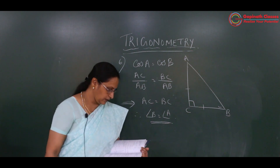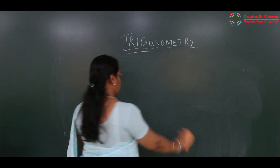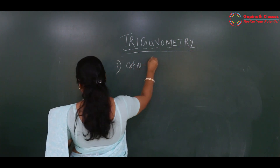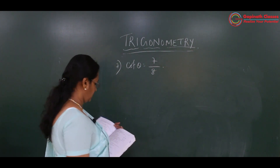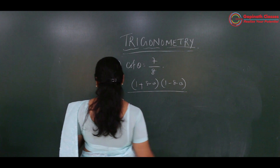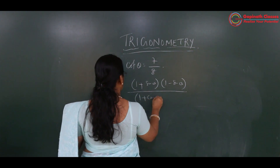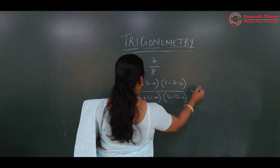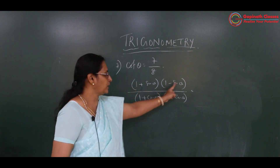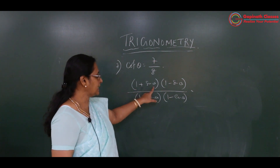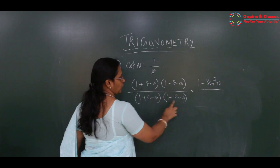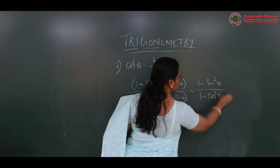Come to the seventh question. One ratio is given and we have to find the value. Evaluate: cot theta is equal to 7 upon 8. Evaluate: 1 plus sin theta into 1 minus sin theta, upon 1 plus cos theta into 1 minus cos theta. This is an identity: A plus B into A minus B equals A square minus B square.